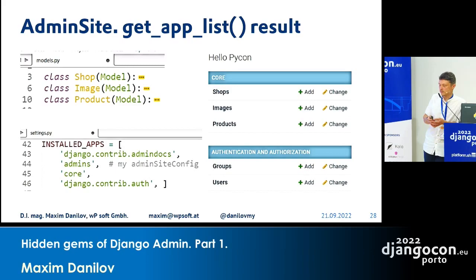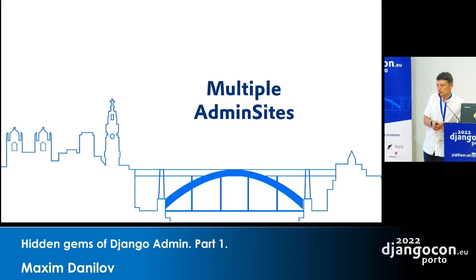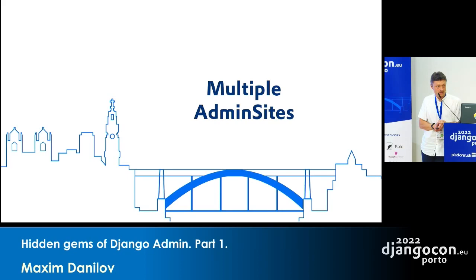I can control the order in which apps appear on my admin site. The next feature is multiple admin sites. Who knows about this possibility in Django? But who actually works with it — who has, for example, five model admin sites in a project?